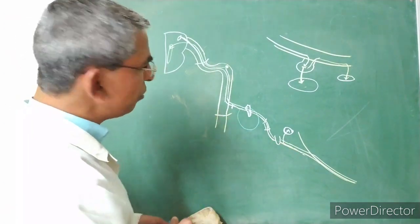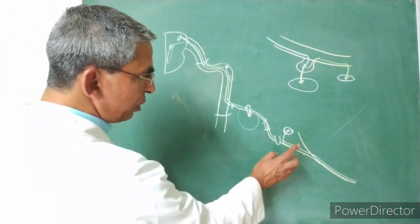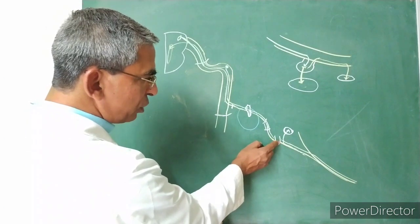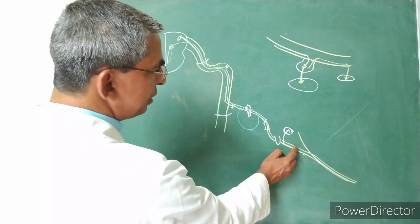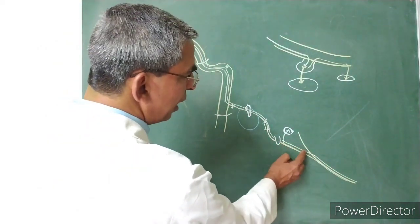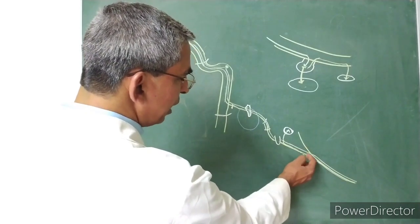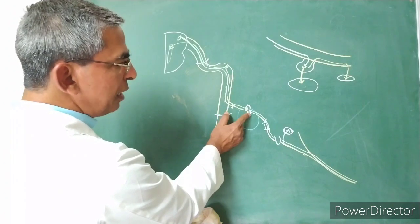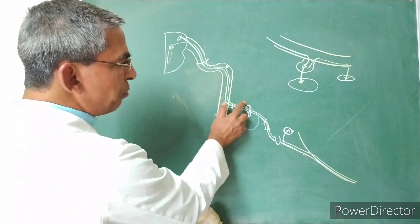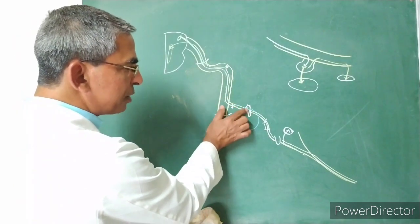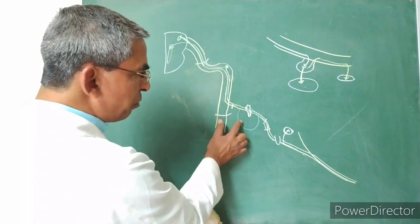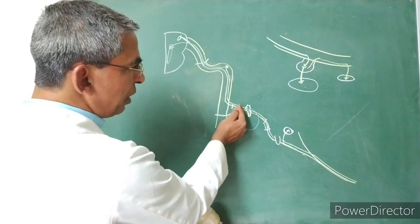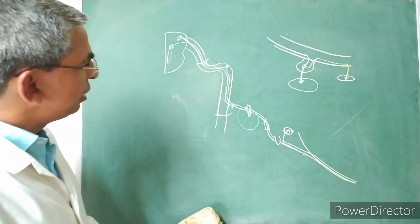In summary, the chorda tympani nerve has important clinical considerations. First, it passes medial to the spine of the sphenoid — a fracture of the spine of the sphenoid can injure the chorda tympani. Second, it joins the lingual nerve at an acute angle, so lingual nerve damage can also damage the chorda tympani. Third, it runs medial to the handle of the malleus between the mucous membrane and fibrous layer of the tympanic membrane — during any perforation or ear surgery, ENT surgeons must take care not to damage this nerve.